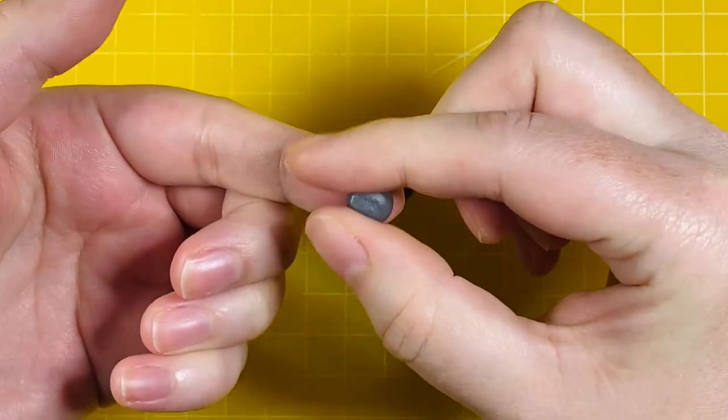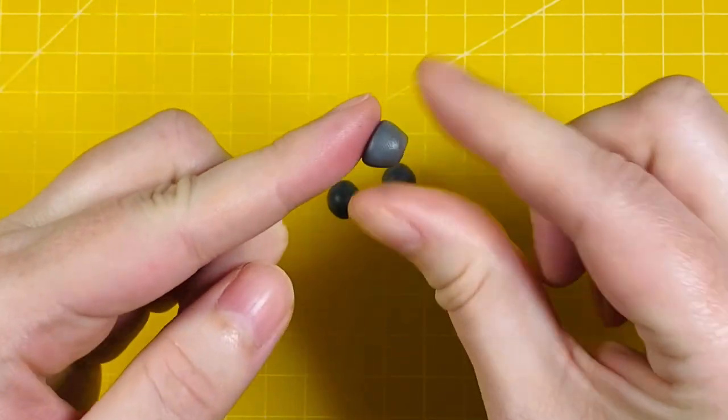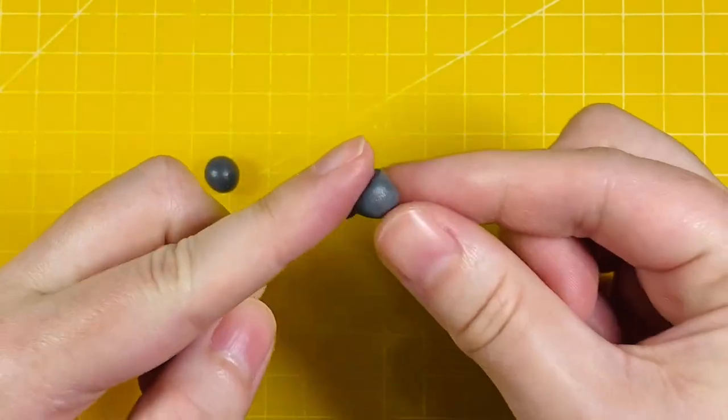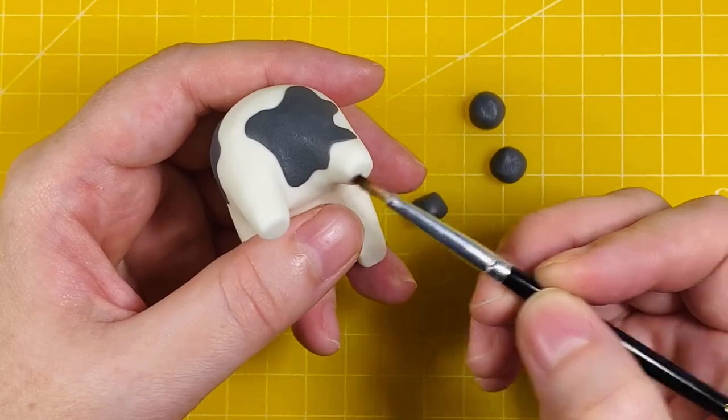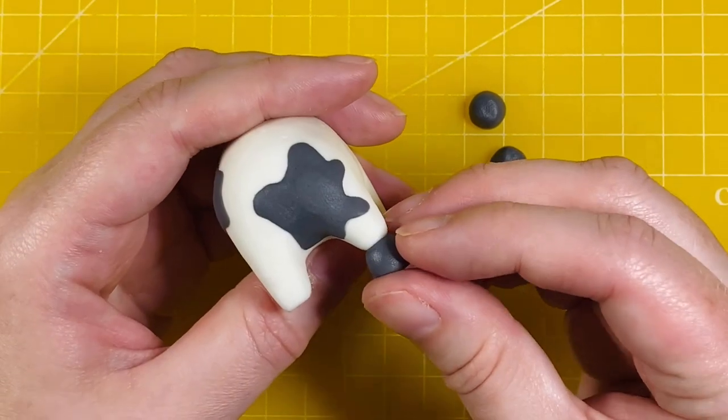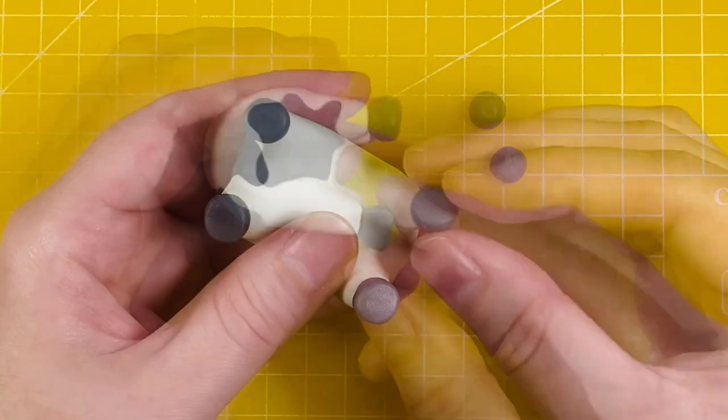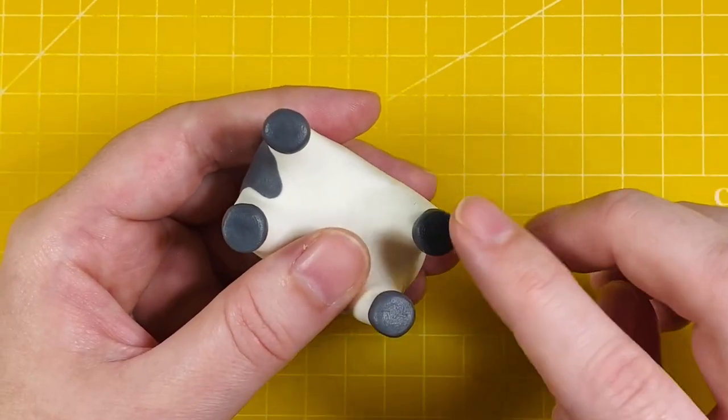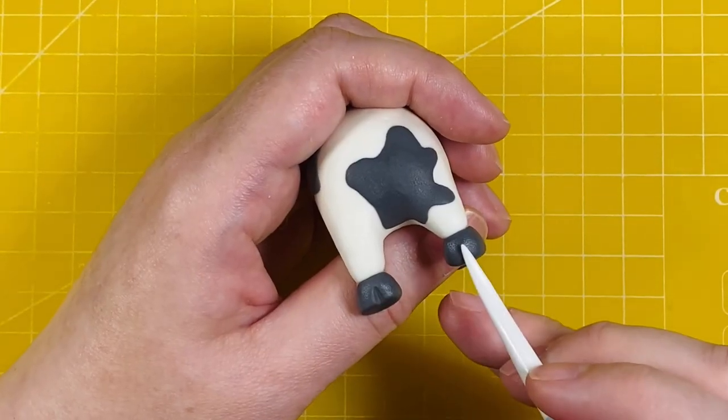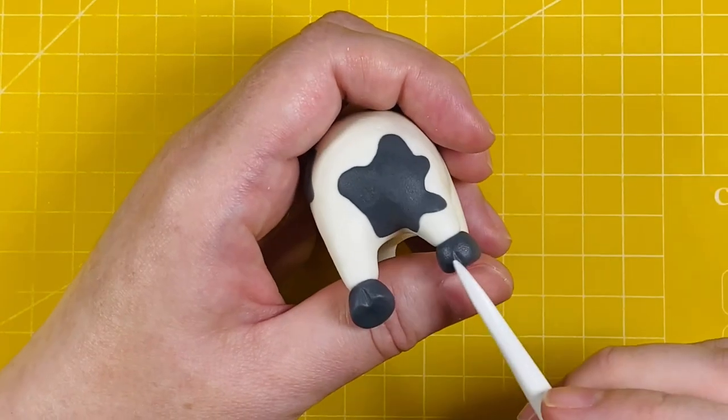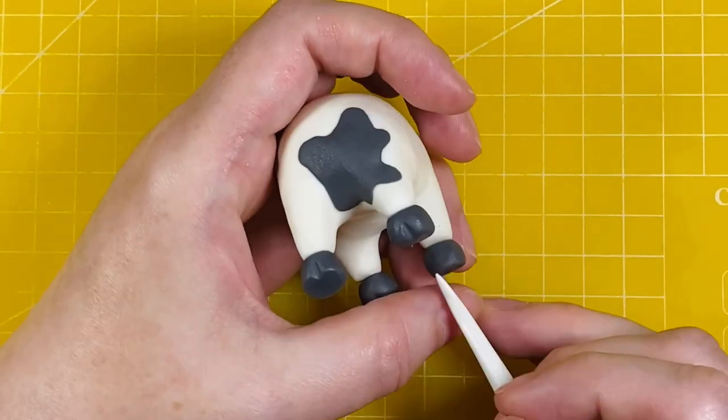Now we're on to the hooves. I've got three grams of that dark gray modeling paste, which I've divided by four, and I'm rolling them into little cylinder shapes and narrowing one end of the cylinder. Paint a little bit of glue on the bottom of the legs and attach the narrow end of the cylinder to the legs. Give them a little pat once they're on, then you can use the Dresden tool to press down and create that little line in the hooves—the cloven hoof.